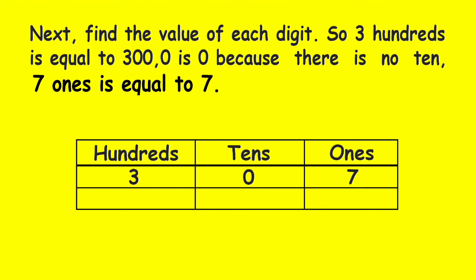Next, find the values of each digit. So, 3 hundreds is equal to 300, 0 tens is 0 because there is no 10, and 7 ones is equal to 7.